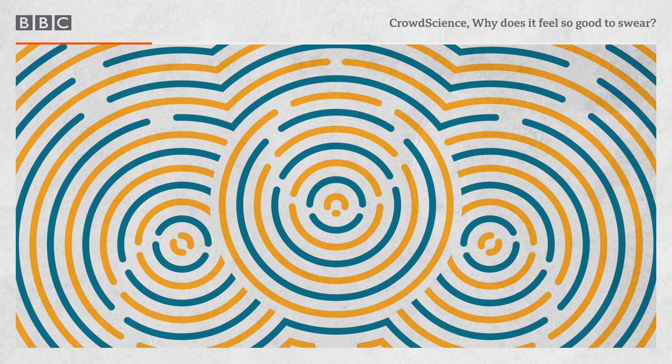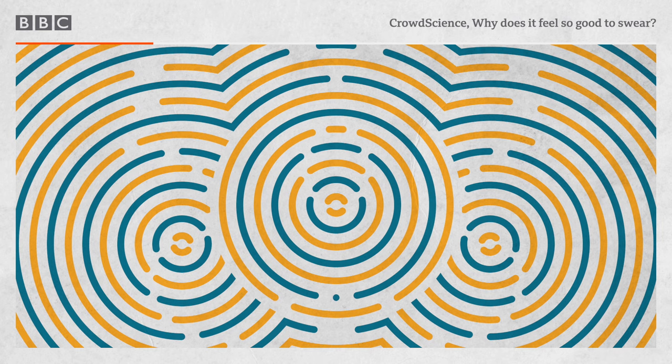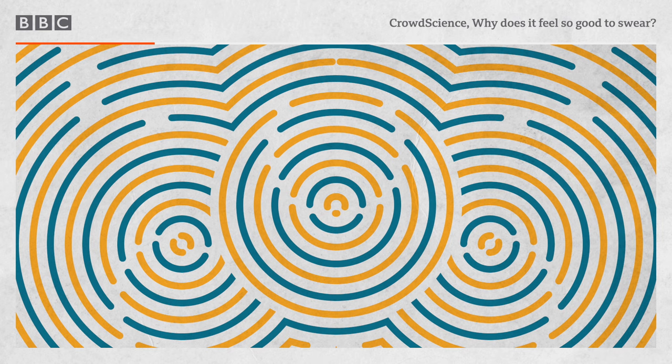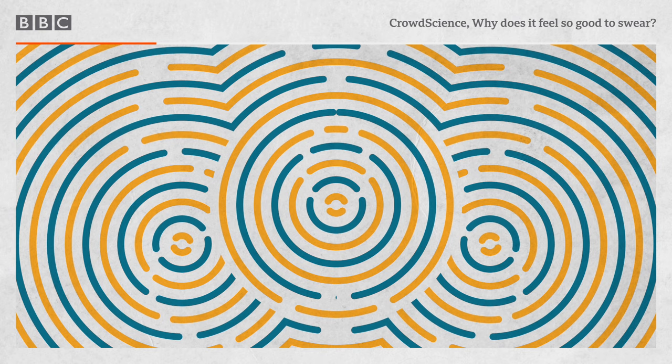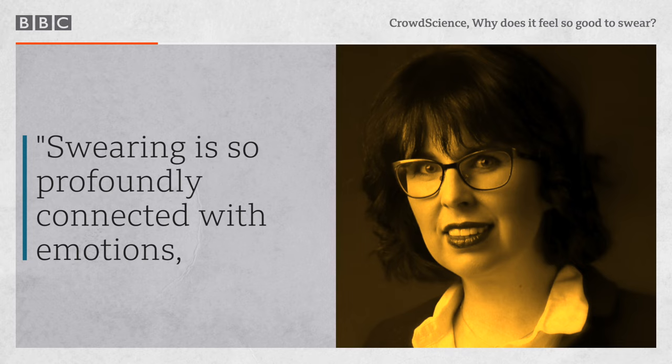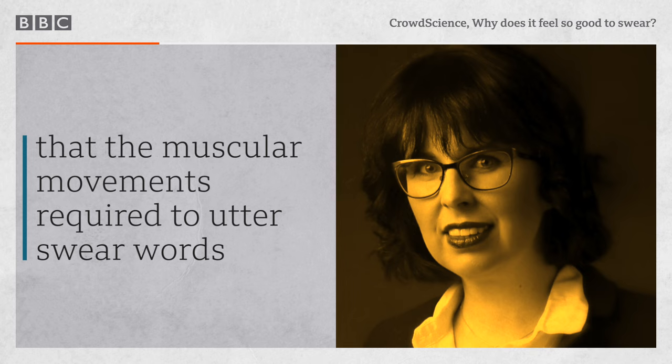It seems we lay down very strong emotional connections to certain types of language and that that is stored separately from the rest of our language. You can remove the entire of a left hemisphere and completely negate somebody's ability to use language in a way that is sort of deliberative and planned like I'm doing now, but they can still spontaneously swear.